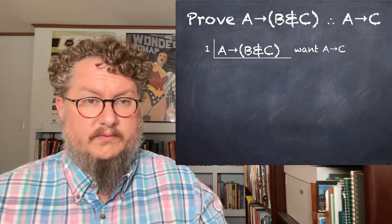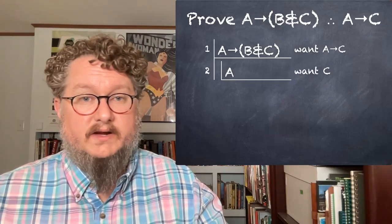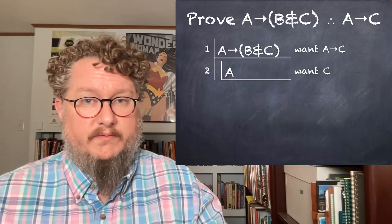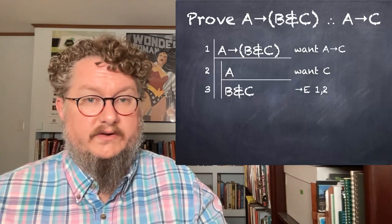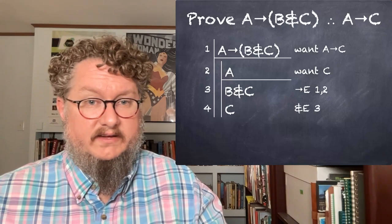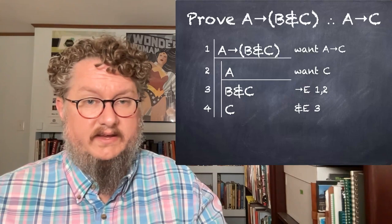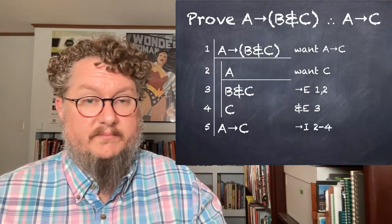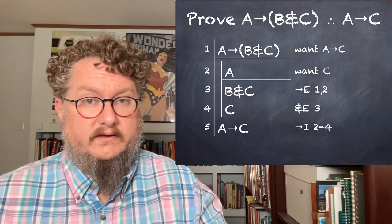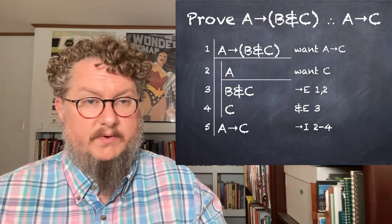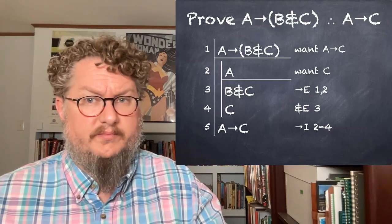In this case, would probably want to do a conditional proof since we're proving a conditional. We start with A. We know we want to get C. We can use conditional elimination to get B and C. We can use conjunction elimination to get C. Then we can discharge our subproof and get if A then C. Now, we did end up using conjunction elimination, but we couldn't apply it directly. We had to go through this subproof process.